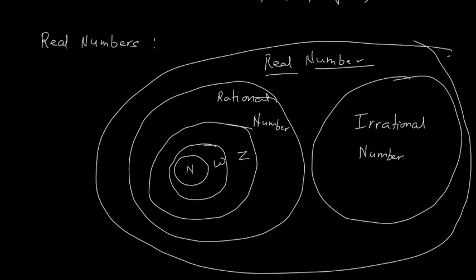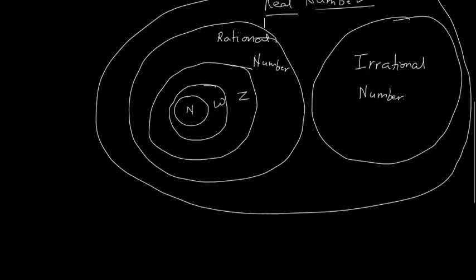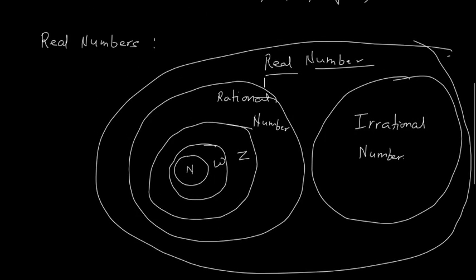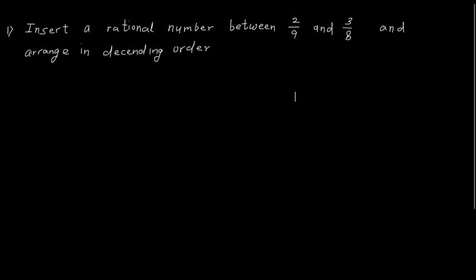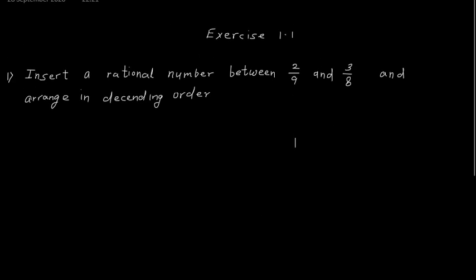Rational numbers — if you want to define them — are numbers which you can represent in the form of p upon q where q is not equal to 0. With this concept, we are clear on what a rational number is. Now let us solve a few problems from your first exercise, Exercise 1.1.